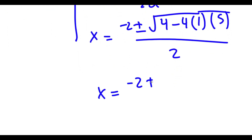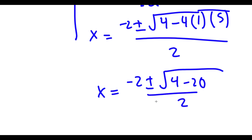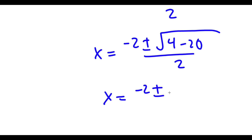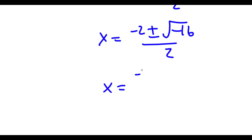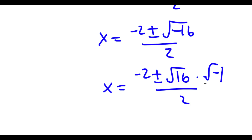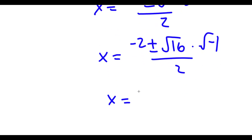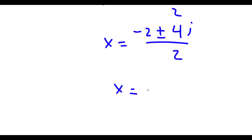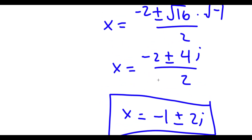This is the same as negative 2 plus or minus the square root of 4 minus 20, over 2, which equals negative 2 plus or minus the square root of negative 16, over 2. The square root of negative 16 is the square root of 16 times the square root of negative 1, and the square root of negative 1 is the imaginary number i. So this gives negative 2 plus or minus 4i, over 2, which equals negative 1 plus or minus 2i. So there are two more complex solutions.